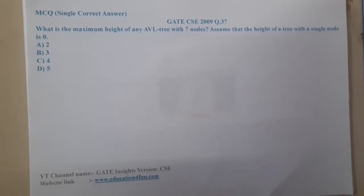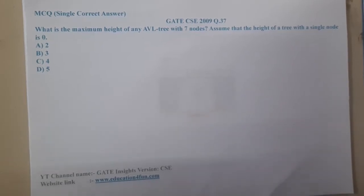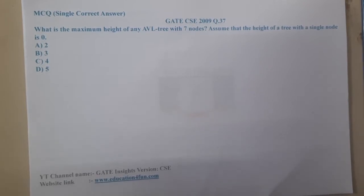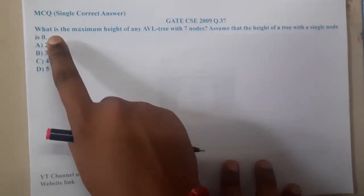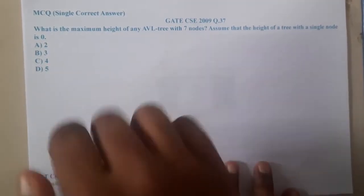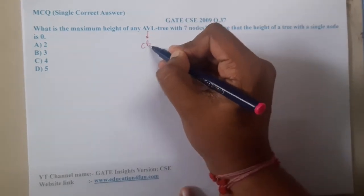Hello guys, we are back with our next lecture. In this lecture, let us continue with the next question, GATE CSE 2009 Question 37. The question is: what is the maximum height of an AVL tree with seven nodes?